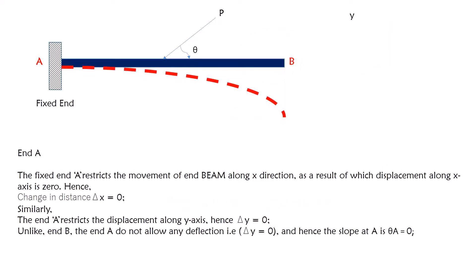Now, we will consider the end A. When you consider the end A, you see it is fixed. The fixed end A restricts the movement of end beam. When you look into the X, Y, Z direction, you can see the fixed end will restrain the movement of that particular point along X direction, along Y direction, and along Z direction.